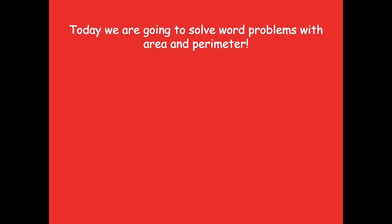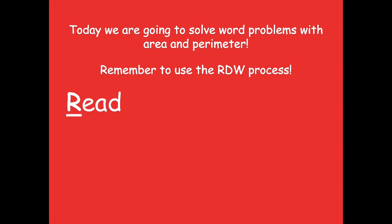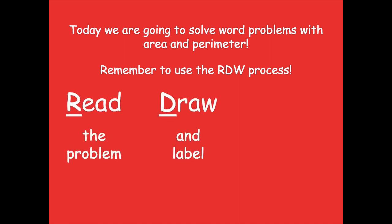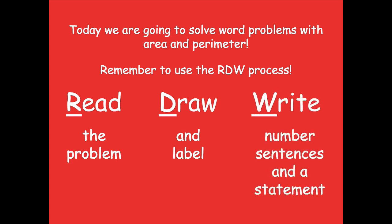Today we're going to be solving word problems with area and perimeter. We're going to have to pay close attention because we've been doing a lot of work with perimeter, but now you're going to see area thrown back in again. Make sure that you're paying close attention so you're answering the question that's being asked. Remember to use the RDW process: read the problem, draw and label a picture, and write a number sentence and a statement.